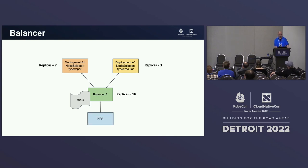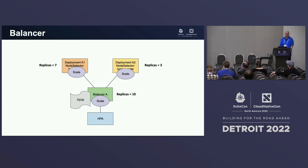If you want to autoscale the deployments, you point your HPA at the Balancer. The Balancer exposes the very same scale sub-resource as an individual deployment, so it will work out of the box with both the Horizontal Pod Autoscaler and Vertical Pod Autoscaler.